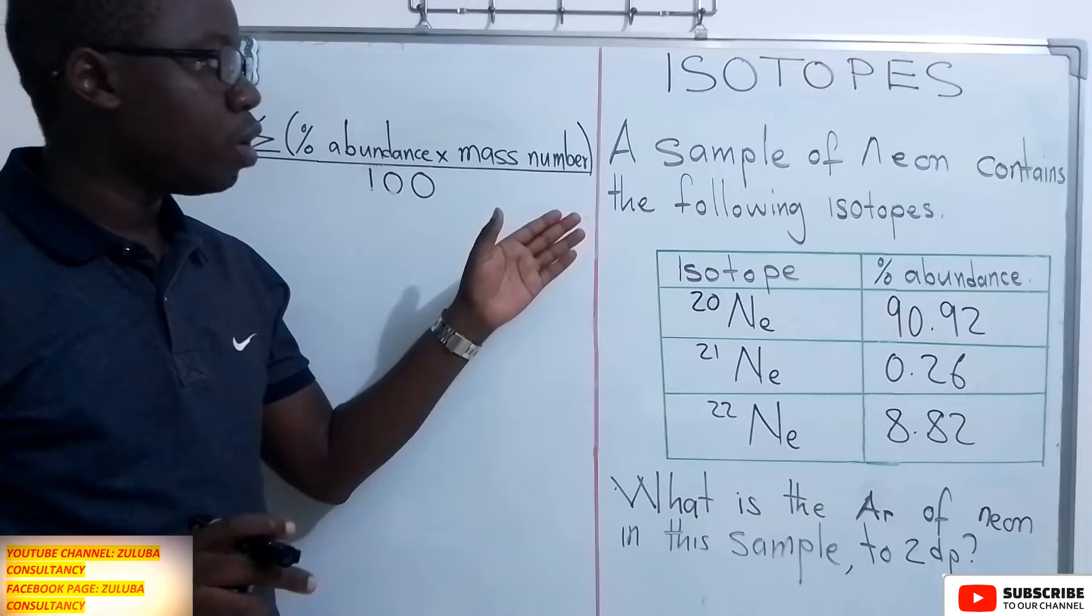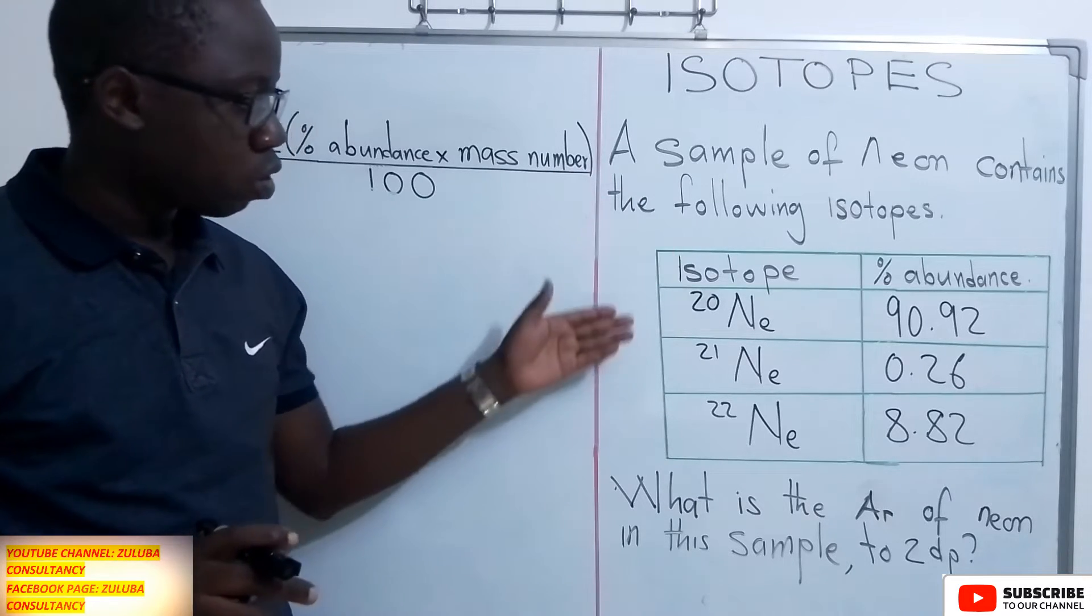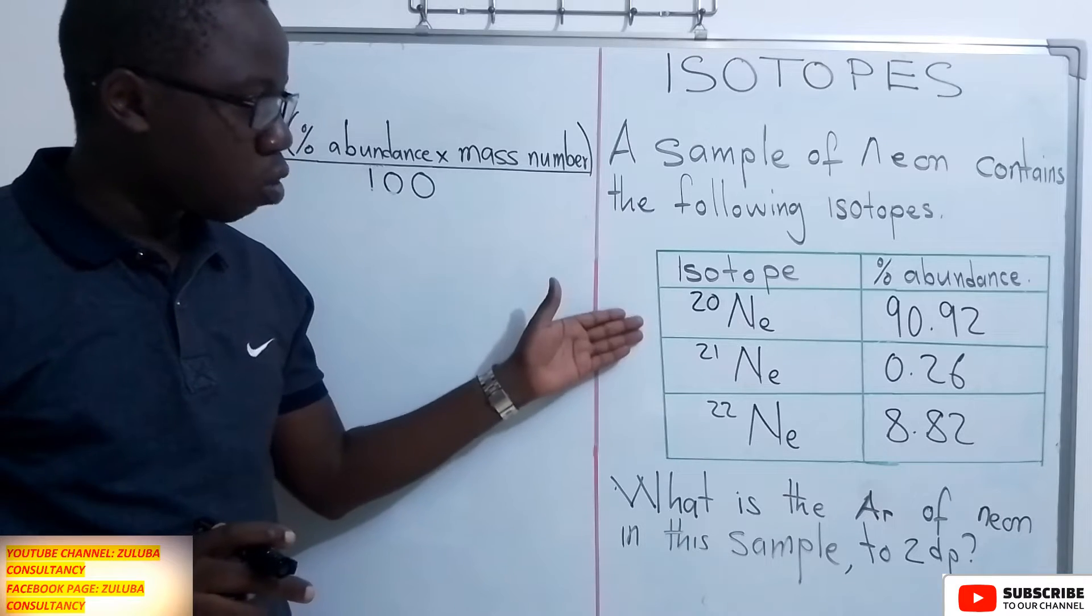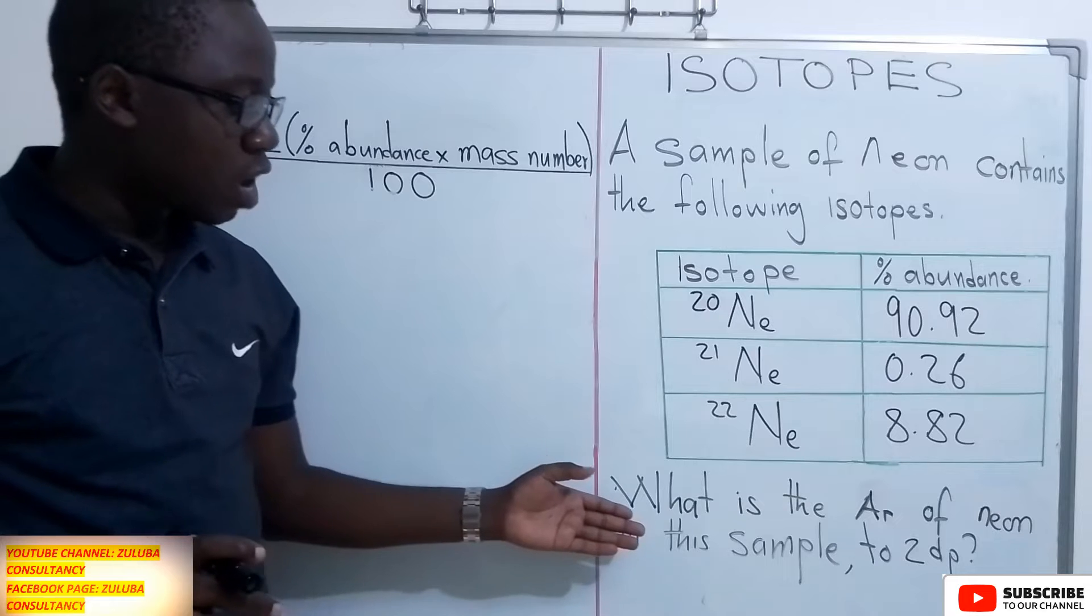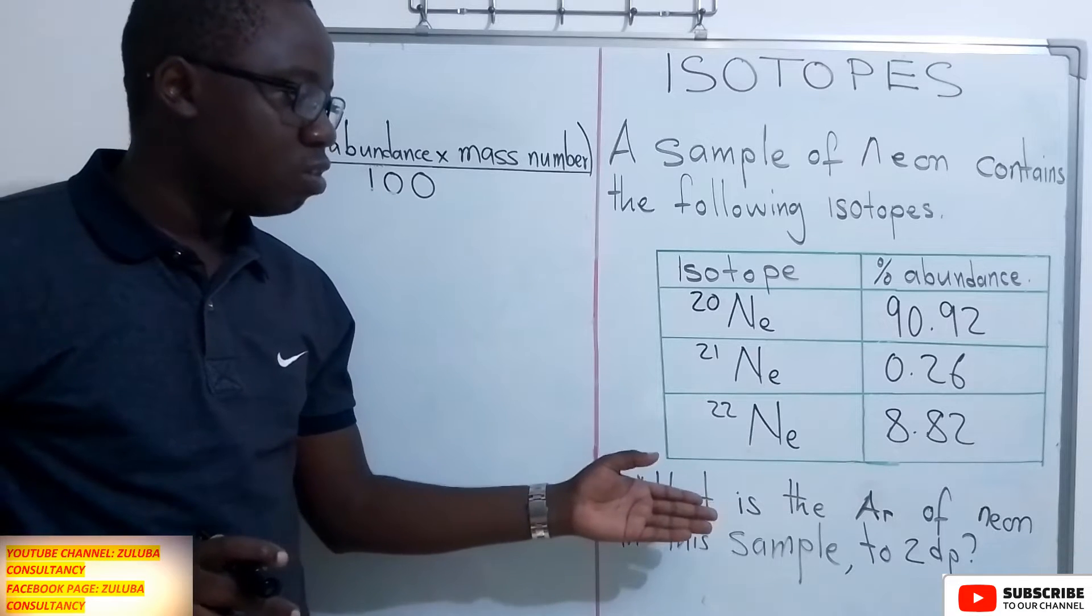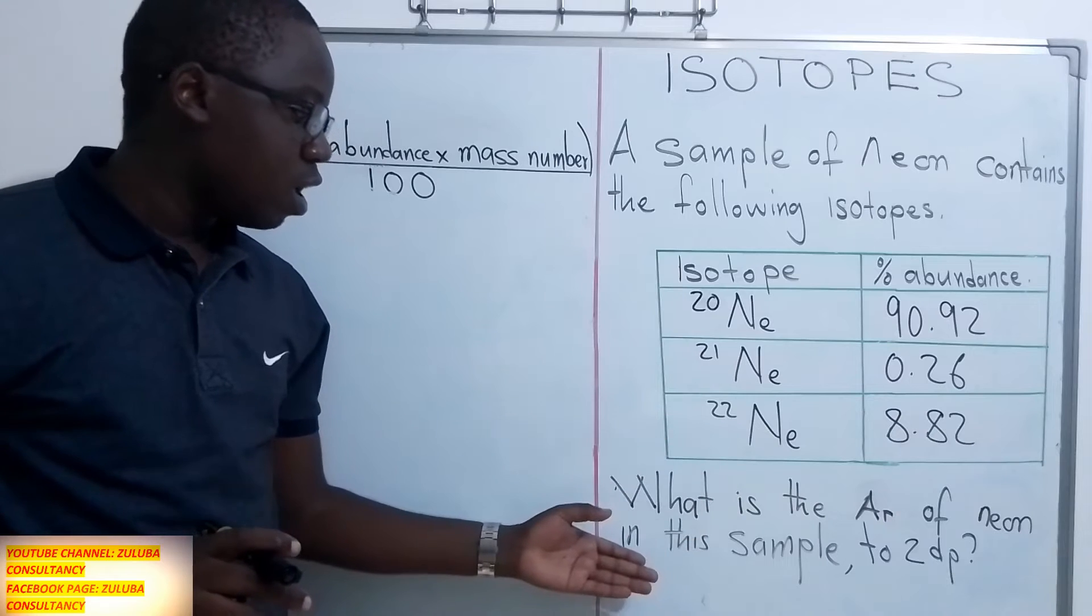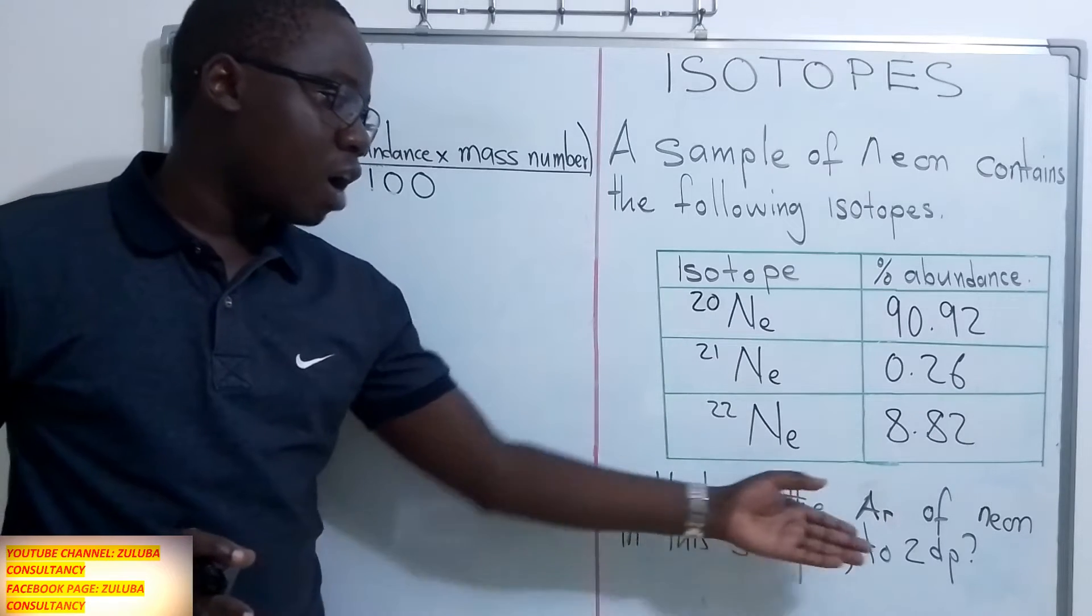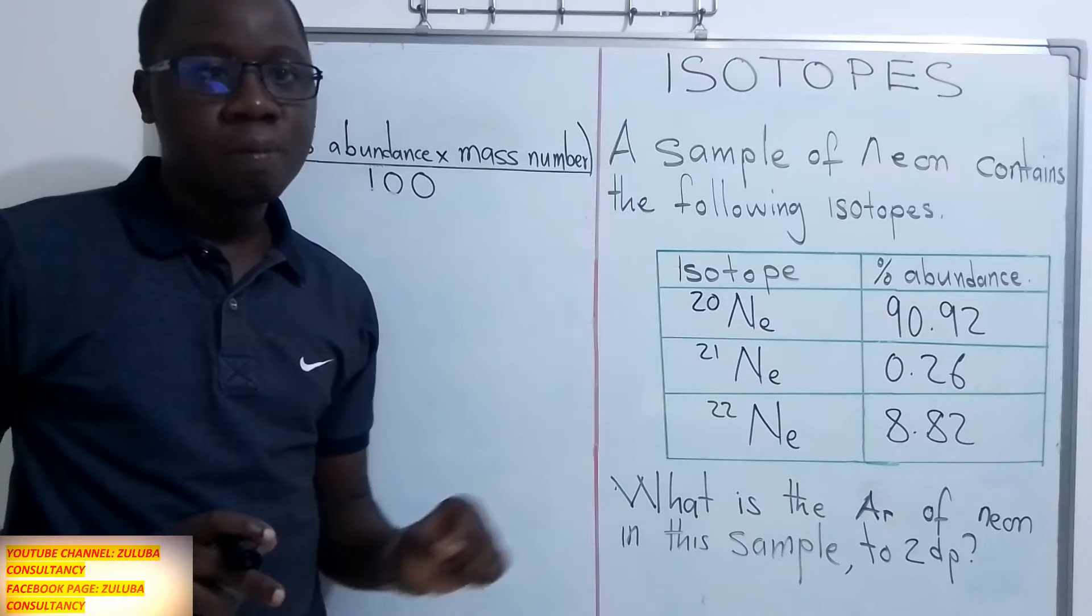So the question reads, a sample of neon contains the following isotopes. So we have these three isotopes and their percentage abundance. We have been asked what is the relative atomic mass of neon in this sample and the answer should be in two decimal place.